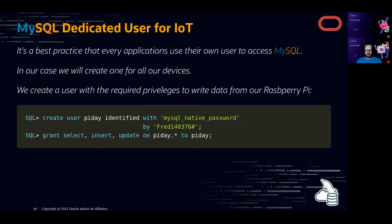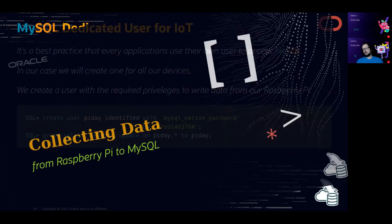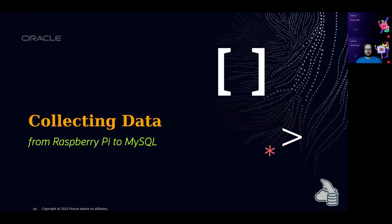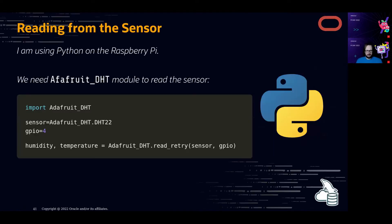Now let's start collecting data from the Raspberry Pi to MySQL. I'm using Python. We import the adafruit_circuitpython_dht module to read from the sensor, define the sensor, then read data using the adafruit_dht read_retry method — very easy. We store the humidity and temperature in two variables, four lines of code, nothing complicated. GPIO pin 4 is where I connected the sensor.